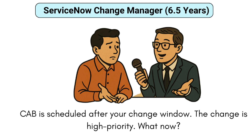So, CAB is scheduled after your change window and the change is high priority — what now? So after going through your question, it means it is truly urgent, like it's fixing a production issue. I would trigger the emergency change in this case, which allows fast approvals from the key stakeholders without waiting for the CAB. If it's not critical, I would postpone the change and notify all stakeholders and update the schedule accordingly and follow the procedure. So I've explained both cases — what I will do in case of urgency and what I will do in case it's not a critical but high priority change.